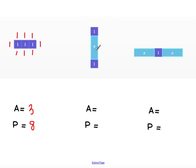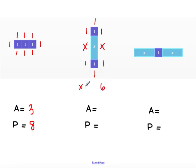Since we have 3 unit tiles, our area is 3. Now if we look at this second shape, we again know that we have side lengths of 1, and then the long side lengths on the x tile are x. I can count up 1, 2, 3, 4, 5, 6 ones and 2 x's. So we have x plus x plus 6 for our perimeter, which simplifies to 2x plus 6.